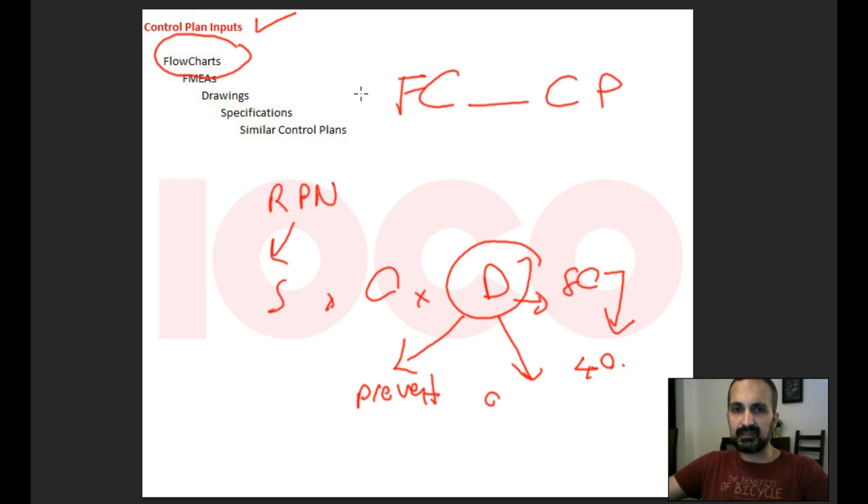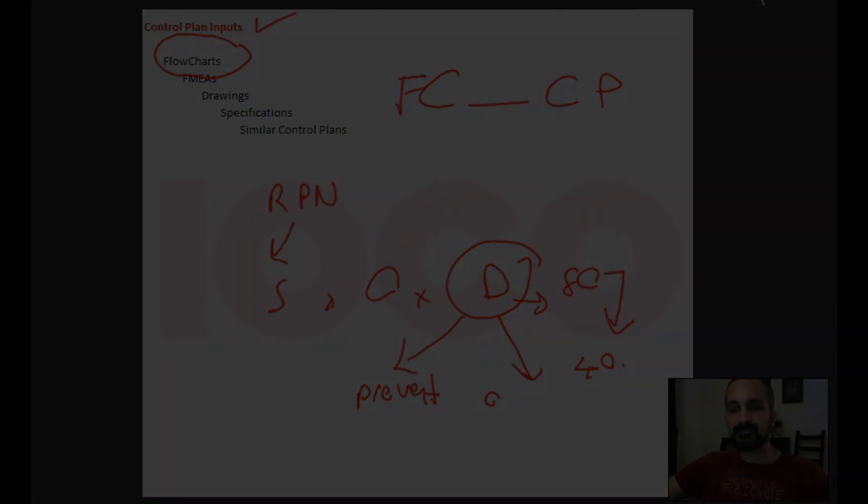Let's go step by step again: flowcharts, FMEAs, drawings, specifications, and similar control plans are the major inputs before you start to make a control plan. Thank you very much.